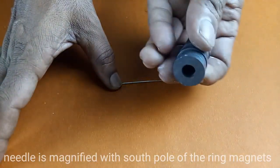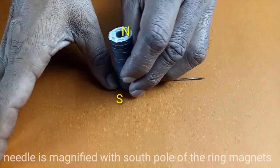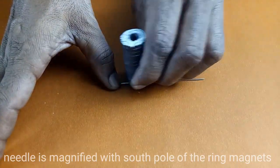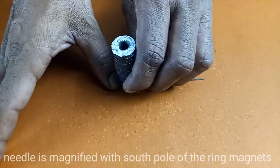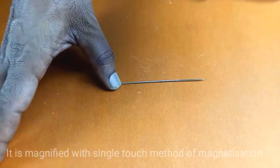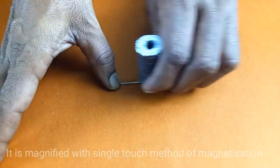Needle is magnetized with the south pole of the ring magnets. It is magnetized with the single touch method of magnetization.